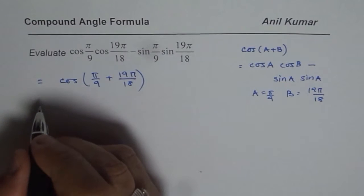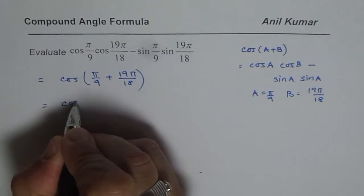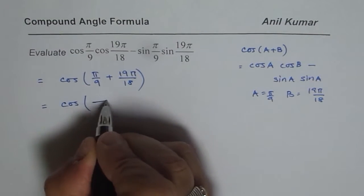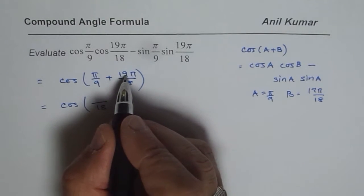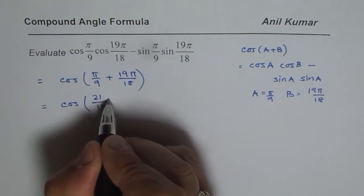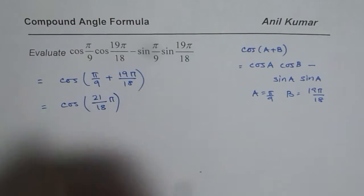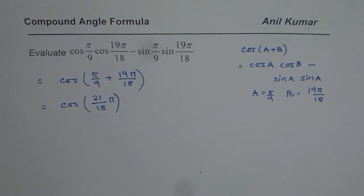Now let us add them up. So what do we get? We get cos of 18 is the common denominator. 2 plus 9 will give us 11, so 21. So 21π/18. So cos of 21π/18, what does that mean?